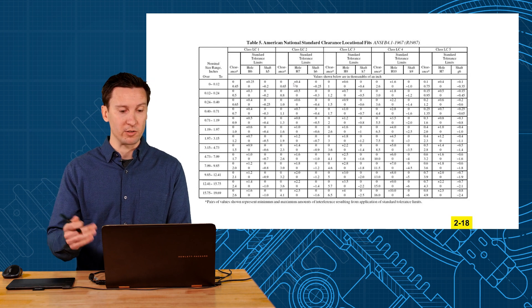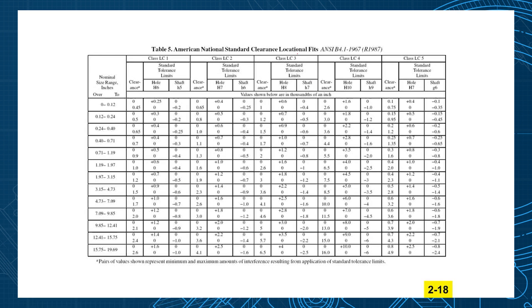Then you go through these series of charts to line those up. Here is your class LC3, these are these series of charts, and then we'll find what is our size limit. There it is. That would be between 1.19 to 1.97. So you line those up and these are the numbers that we should be putting onto our drawing.